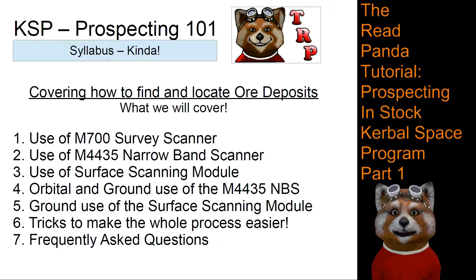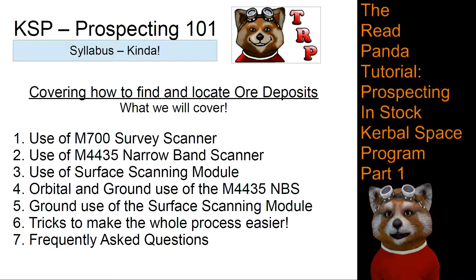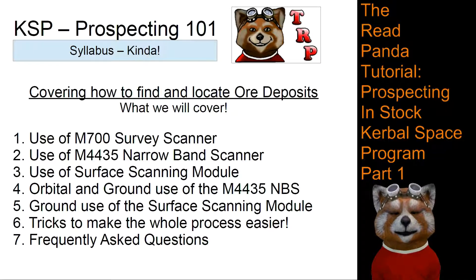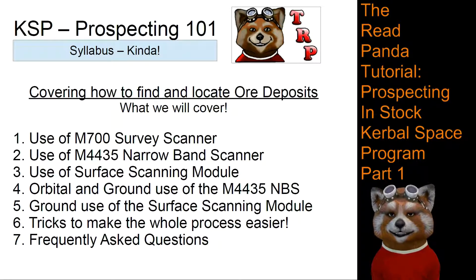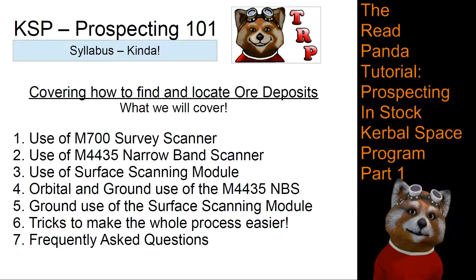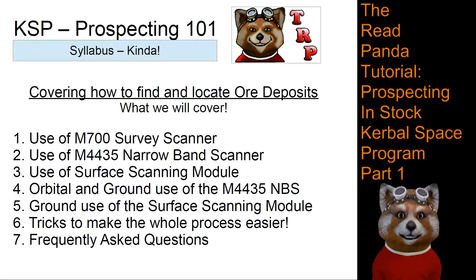We're going to cover how to use the three main components: the M700 Survey Scanner, the M4435 Narrowband Scanner, and the Surface Scanning Module. We'll cover both orbital and ground use of the Narrowband Scanner, the ground use of the Surface Scanning Module, and some tricks to make the process easier. At the end we'll cover some frequently asked questions that came up during a Twitch stream when I was putting these slides together.